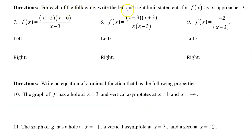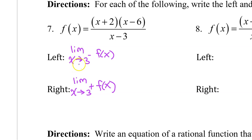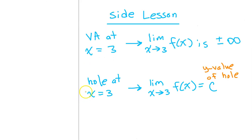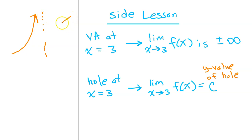For each of the following, write the left and right limit statements for f(x) as x approaches 3. We are being asked to find the limit as x approaches 3 from the left and the limit as x approaches 3 from the right. Quick side lesson: if we have a vertical asymptote at x equals 3, then the limit as x approaches 3 will be either positive infinity or negative infinity. If we have a hole at x equals 3, the limit as x approaches 3 will be a constant — the y-value of the hole.